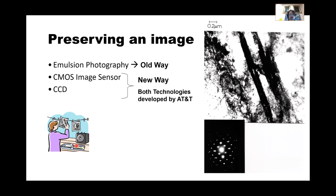This was made with emulsion photography — I took a negative, used chemicals, and projected the image onto photographic paper. We still have the dark rooms in our department, though they're not necessarily used as dark rooms anymore. Emulsion photography was the old way, and I think the contrast on that image is actually pretty good. The new way is electronic imaging sensors.